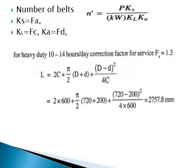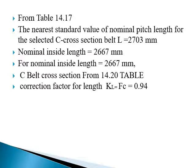Calculate the length of the belt: CL = 2C + (π/2)(D + d) + (D − d)² / 4C. Substituting all values gives CL = 2757.8 millimeters, or approximately 2.7 meters. From Table 14.17, the nearest standard value for a C cross-section belt is 2703, giving a nominal inside length of 2667 millimeters.